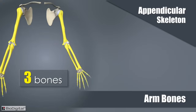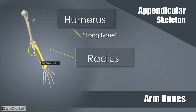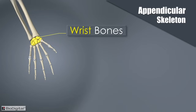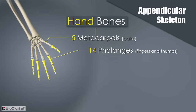The arm is composed of three bones. The upper bone is known as the humerus, categorized as a long bone. The lower bones, of which there are two, are called the radius and the ulna. Attached to the radius and ulna are the wrist bones, otherwise known as the eight carpals. Attached to the eight carpals are the hand bones, comprised of five metacarpals, which form the palm of the hand, and the fourteen phalanges, which form the fingers, including the thumbs.